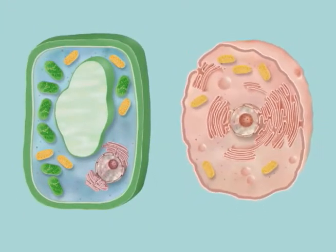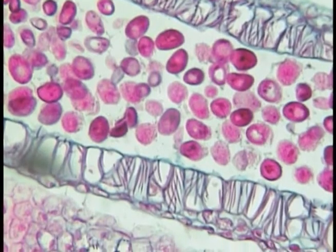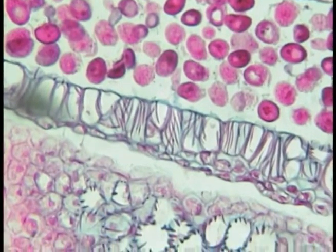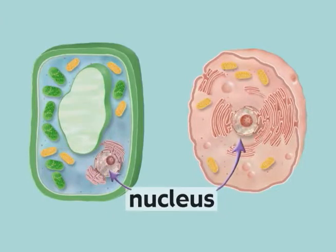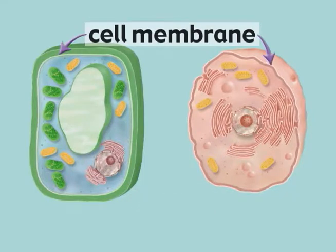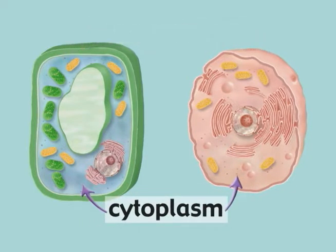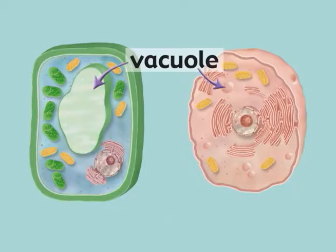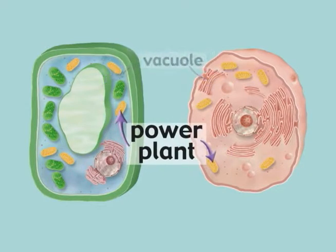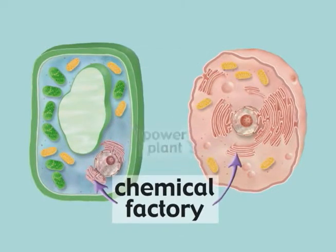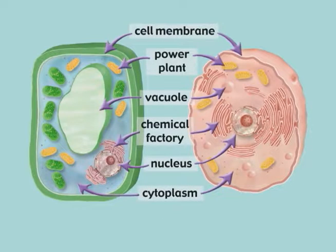Let's start with the types of cells that have a nucleus. These would be the types of cells you would find in plants and animals. Along with a nucleus, plant and animal cells also contain a cell membrane, cytoplasm, vacuoles, a power plant, and a chemical factory — everything they need to carry out the basic life functions.